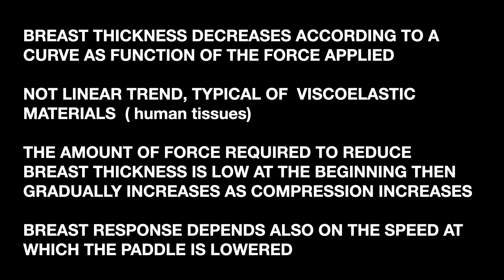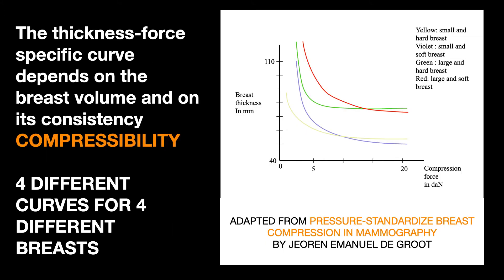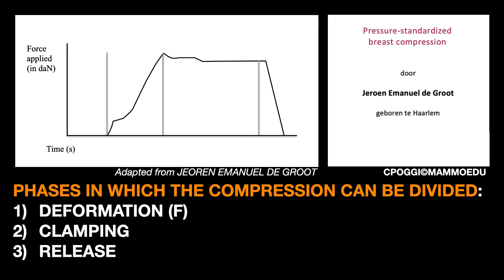The response in decreasing thickness with respect to the force exerted also depends on the speed at which the compression paddle is lowered. The thickness-force-specific curve depends on the breast volume and its consistency — what in the first lesson we called breast compliance or compressibility. You can see here a qualitative graph demonstrating four different responses by four different types of breasts, updated from a very interesting work by the Dutch colleague de Grote. The compression process can be divided into three phases, again according to de Grote. First, deformation, in which the breast gradually decreases in thickness as the compression paddle lowers and is flattened onto the detector surface, measured in strength.